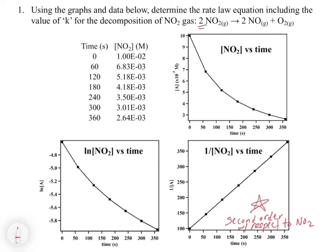Don't be fooled by the stoichiometric coefficient of 2 in the chemical equation — the reaction could be second order without necessarily having a 2 there. You cannot determine reaction order just from stoichiometry; you must use kinetic data or the method of initial rates. From the kinetic data here, we confirm it's second order, so we write: rate equals k times the concentration of NO₂ squared.